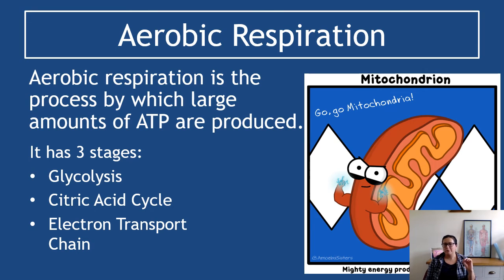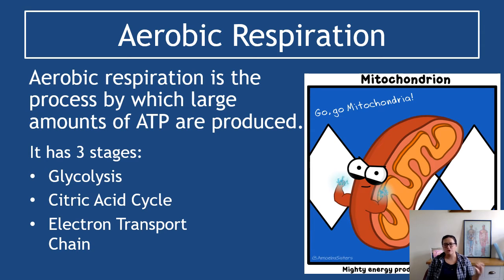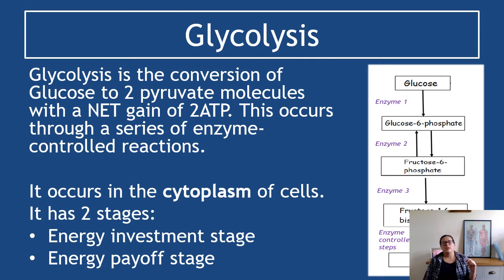Aerobic respiration is a process by which large amounts of ATP are produced — this is our preferred type of respiration inside our own muscles and body. The three stages — you need to know the names of them. Stage one is called glycolysis. Stage two is the citric acid cycle. Stage three is the electron transport chain. You may sometimes see stage two referred to as the Krebs cycle — you have to call it the citric acid cycle, but they are the same process. You may also see the electron transport chain referred to as the cytochrome system. The SQA wants you to use the terms 'electron transport chain'.